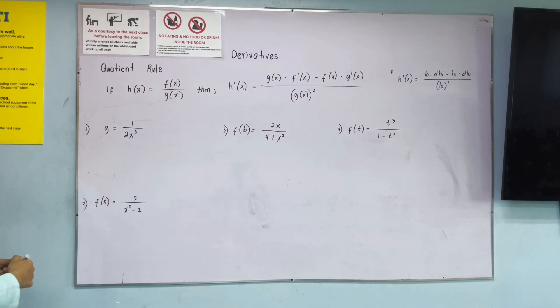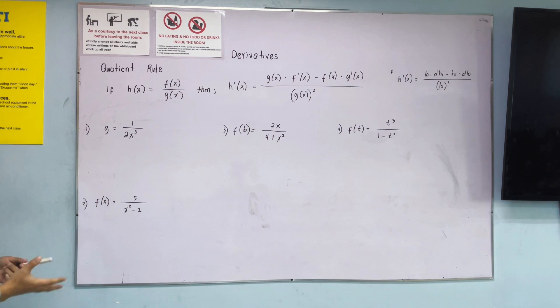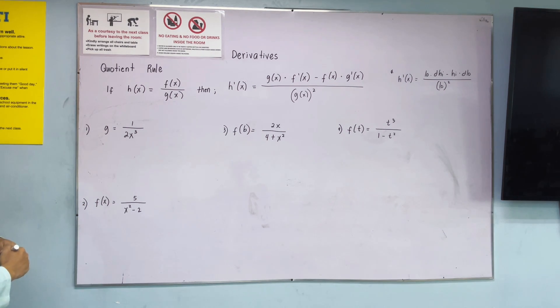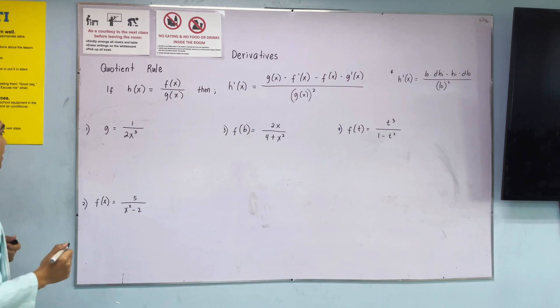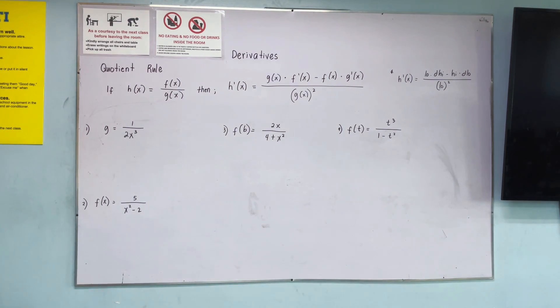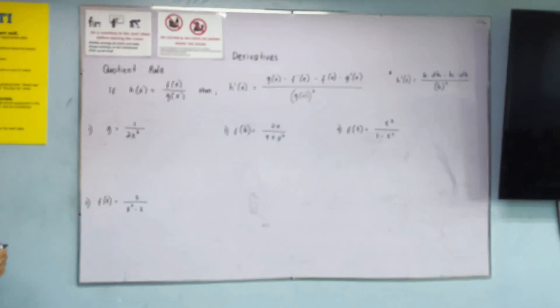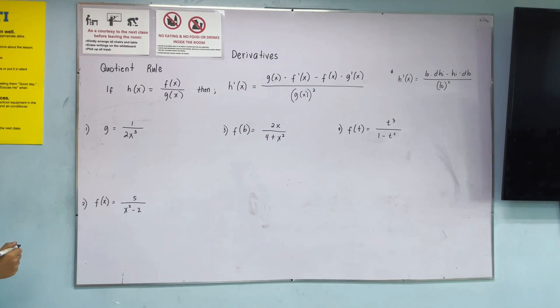So to better understand, let's apply the quotient rule to our examples. Number 1: g is equal to 1 over 2x cubed.